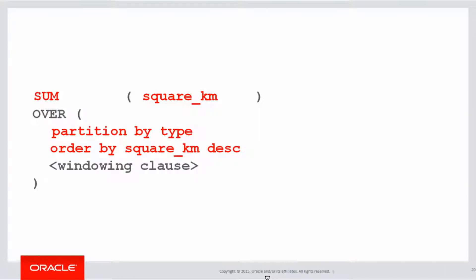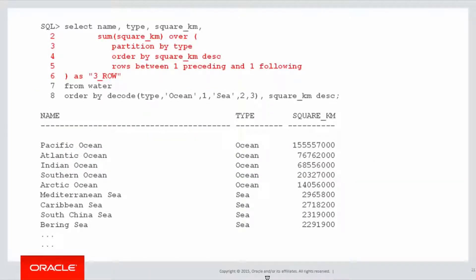What that means from a windowing perspective is look one row back, look one row forward, and obviously the current row makes up the total of three rows. So we can take that, insert it into our SQL, and here's a result coming out in the column called three row.